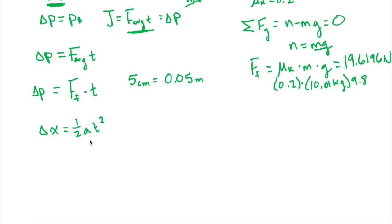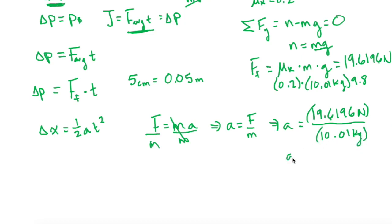But we don't know a either, so we have to solve for one more thing. Well, we know the friction force now, so force is equal to ma. Isolate a, and we get a is equal to F over m. So that gives us a is equal to the 19.6196 newtons divided by the mass, which we said was 10.01 kilograms. So a, if you plug that into your calculator, will give us 1.96 meters per second squared.